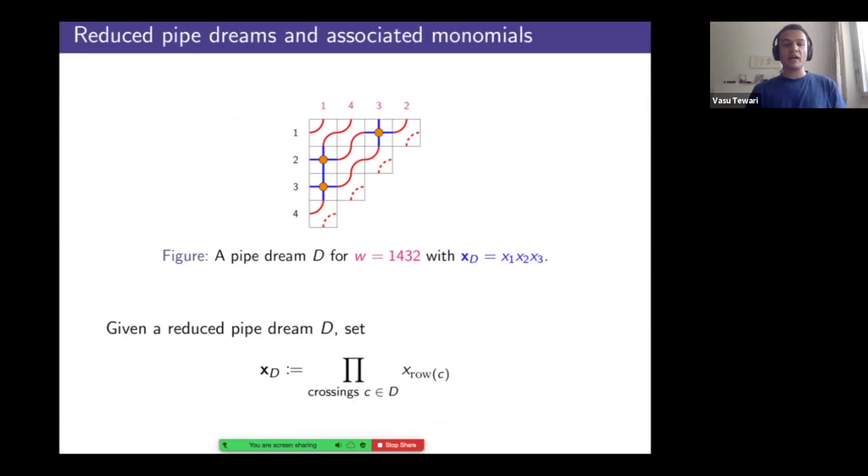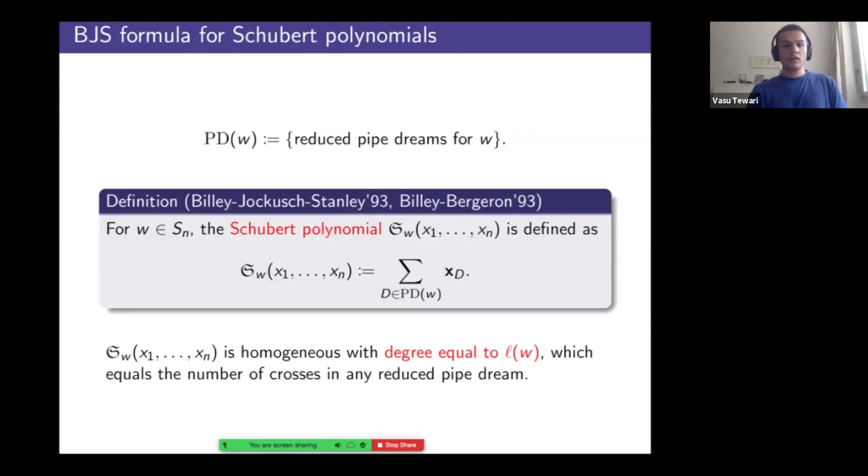All right, so Schubert polynomials, I'll define them using reduced pipe dreams, best done via example. So pipe dreams are this combinatorial gadget. If the permutation was 1432, I record the permutation along the columns and I record the identity permutation along the rows. I'm going to place two types of tiles, either the red ones, elbows, or the blue ones, the crosses. And the aim is to connect i to i so that two strands intersect at most once. So this is a reduced pipe dream for 1432. And with any such pipe dream, I attach a monomial, which is I record the crossings, the rows in which the crossings lie, in this case x1, x2, x3. So here's the beautiful result of Billy Jocko Stanley in terms of compatible sequences and Billy Bergeron in terms of pipe dreams. If PDW denotes the reduced pipe dreams for the permutation W, take the monomials attached to these, sum them up, and what you get is a Schubert polynomial. And this is going to be a homogeneous polynomial with the degree equal to the length of the permutation.